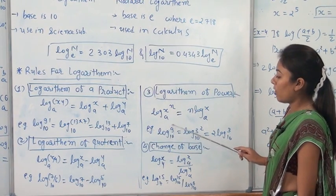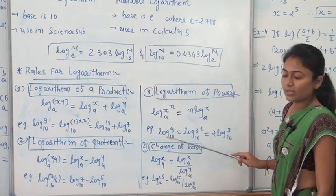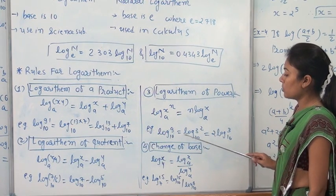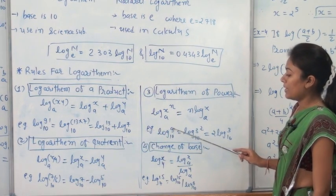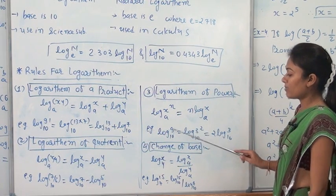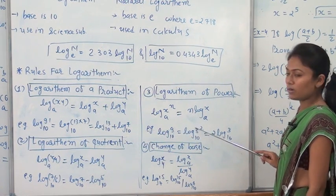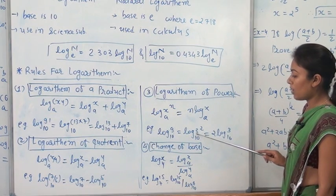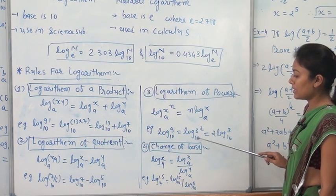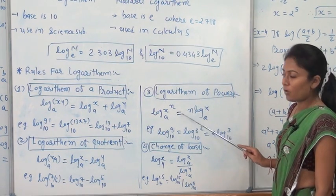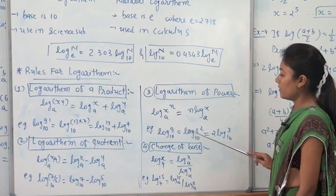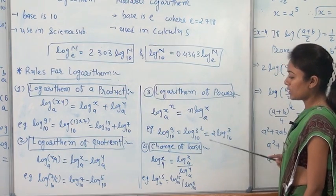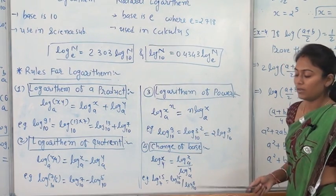Suppose we have log 9 base 10. We know 9 equals 3 squared, so we write log 3 squared base 10. Now, using the logarithm of power rule, we can write this as 2 times log 3 base 10.